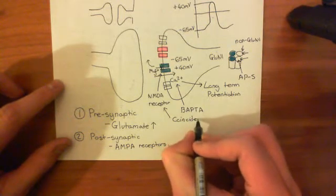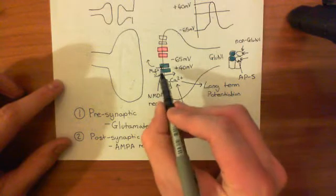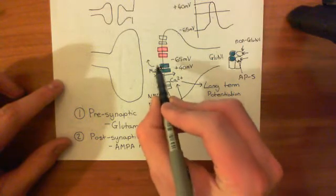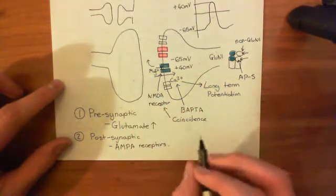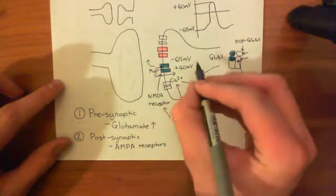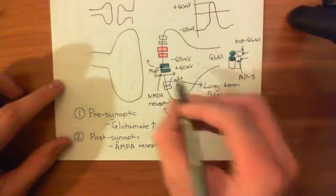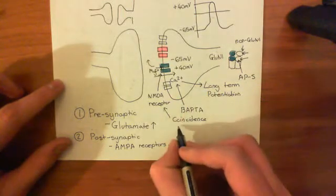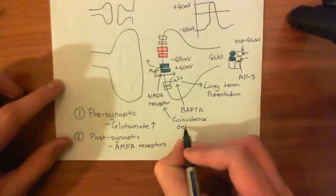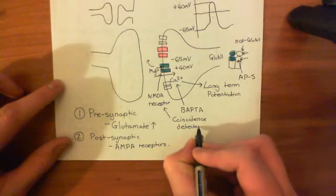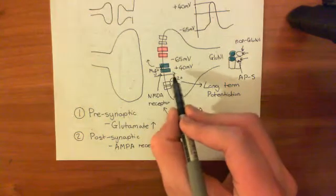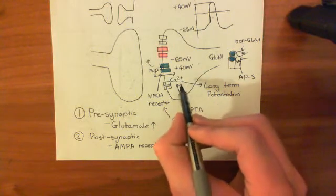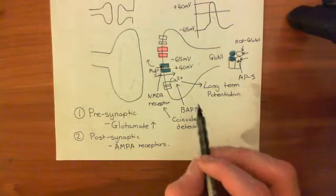To become active, to actually conduct, it needs not only glutamate from the axon terminal, but it also needs an action potential across the cell membrane of the dendritic spine. So it's a coincidence detector, really. And basically, when those two are coupled, it conducts calcium into the cell, and that calcium is then going to lead to the strengthening of this synapse.